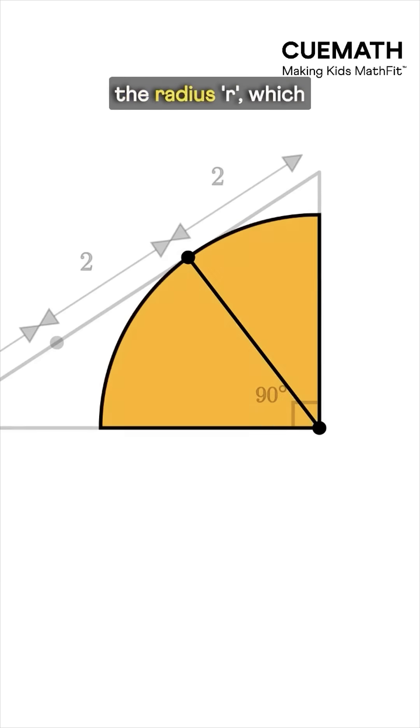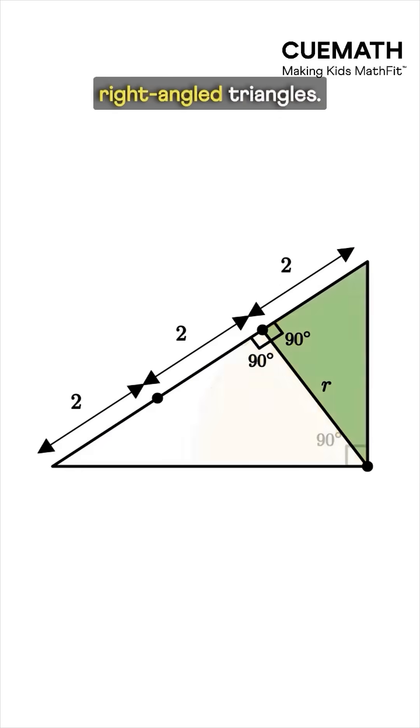Joining these two points gives the radius r, which must be perpendicular to the tangent. This creates two right-angled triangles.